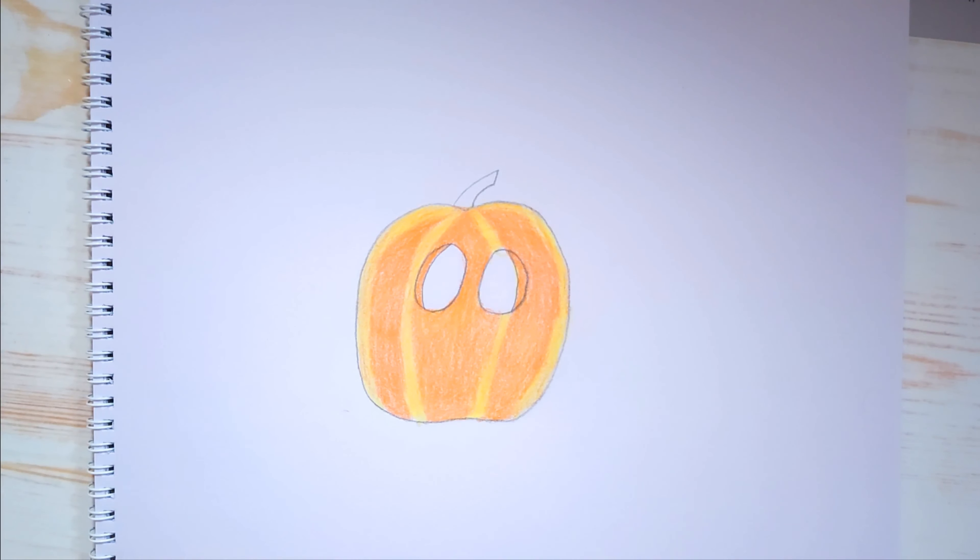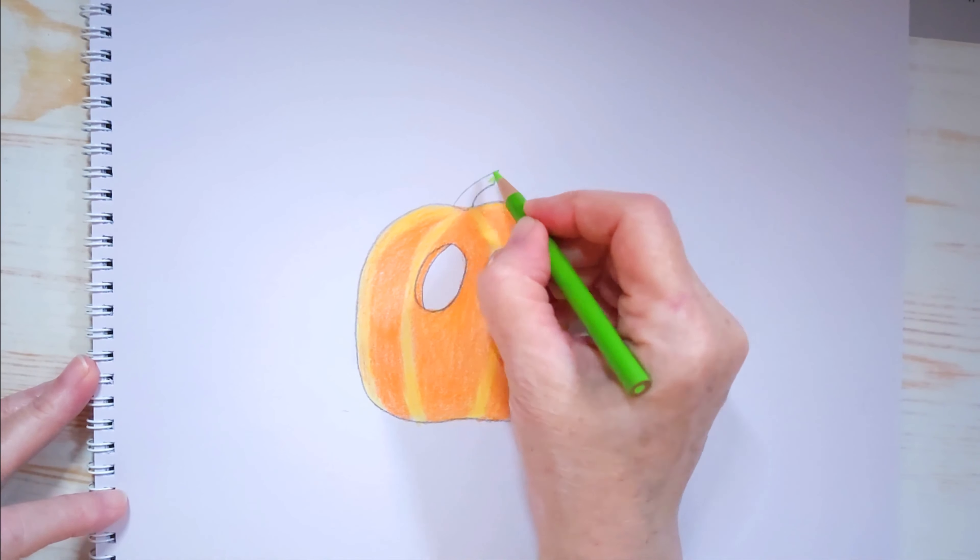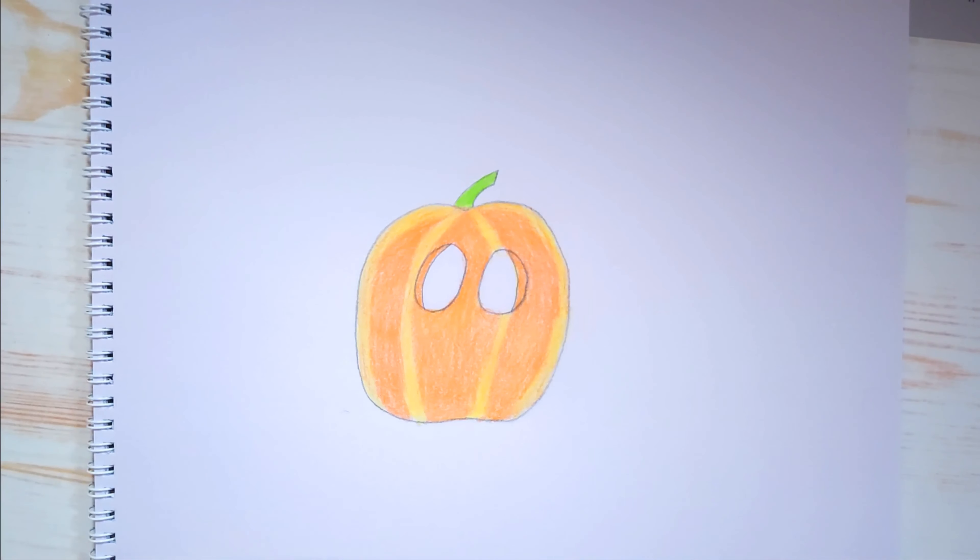So now let's grab our green and we're just going to put two layers of green into the stem. Now that you know what I mean, I can tell you that. I don't have to say let's color it in once, let's color it in twice. I just have to say two layers and you know exactly what that means. There, those are my two layers.